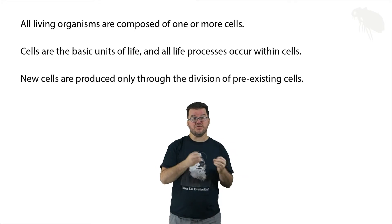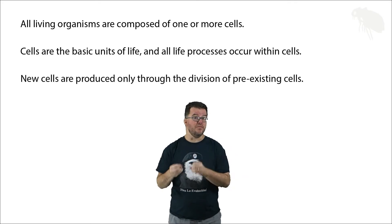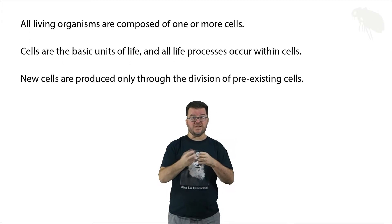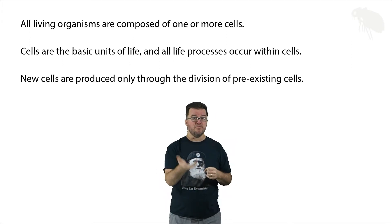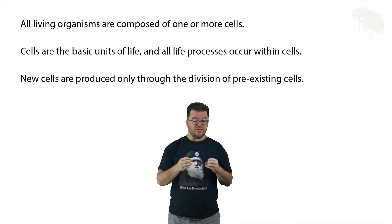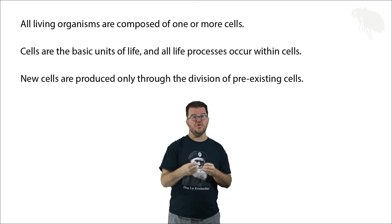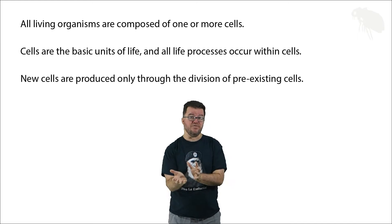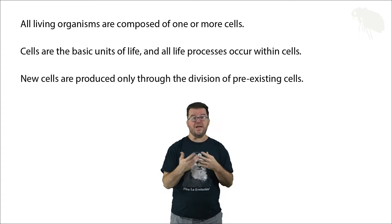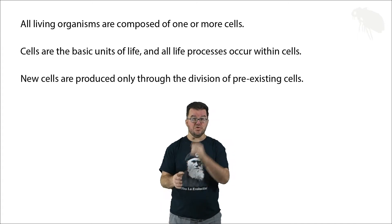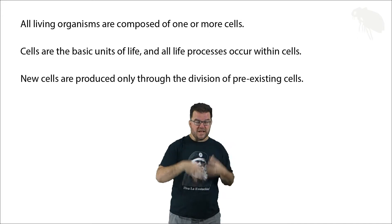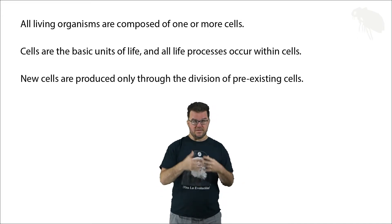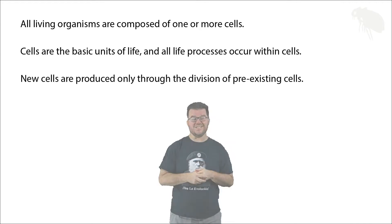And finally, cells arise only from the division of pre-existing cells. All new cells come from cells that already exist — they don't just pop out of nothingness. Now there's a separate question of the origin of the first cells. There's a whole separate body of theory in biophysics called primary abiogenesis that deals with that issue. What we're talking about is life as we understand it in the world in which we live: cells are derived only from pre-existing cells.